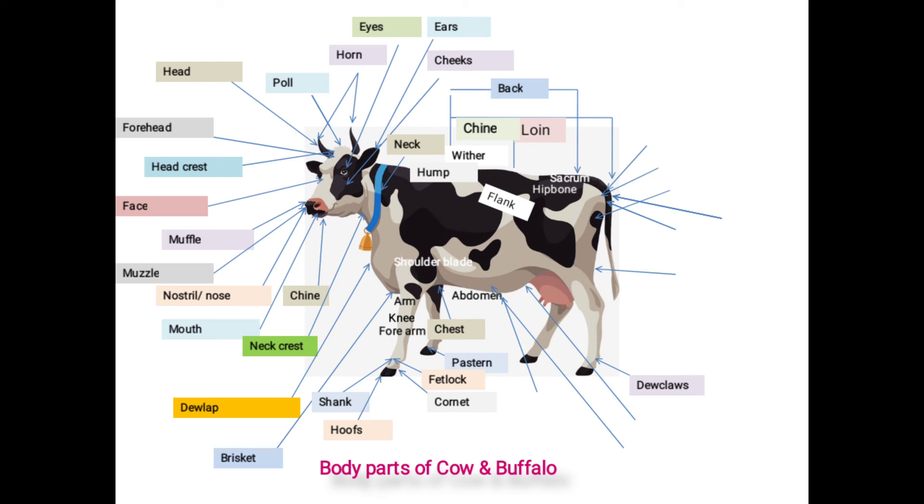Then hind quarters. This region provides the information on the development of reproductive organs, mammary glands, hence it has important role in the selection of dairy animals.